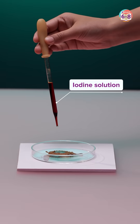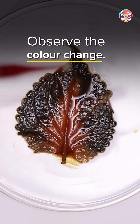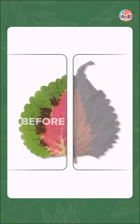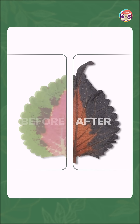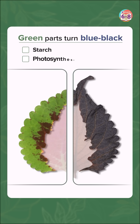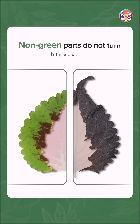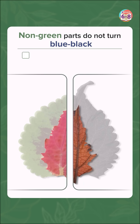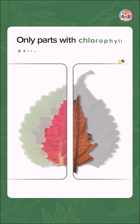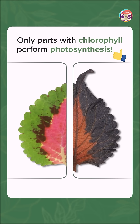When we add the iodine solution, we will observe the color change. Here we have the before and after of the experiment. The green part will turn blue-black, meaning starch was produced and photosynthesis occurred. The non-green part will not turn blue-black, meaning starch was not produced and photosynthesis did not occur. So only parts with chlorophyll perform photosynthesis.